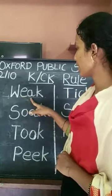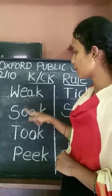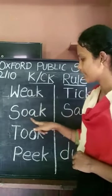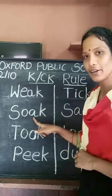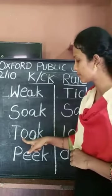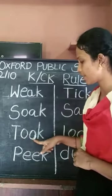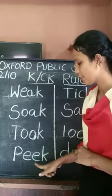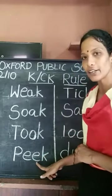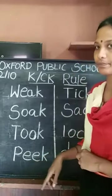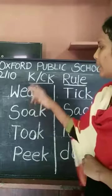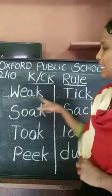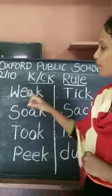The first word — we have two vowels. Second word — two vowels. Third word — two vowels. Fourth word — two vowels. Let me say the names of these words.